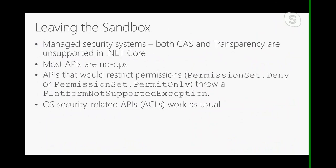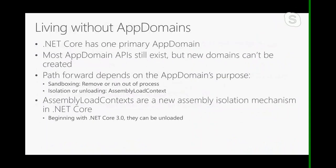In most cases this doesn't require any changes in your application — you just need to understand that these attributes and calls no longer have any effect. The one case where this will require a change is if you're using any APIs which restrict permissions. If you call PermissionSet.Deny or PermitOnly, these would have worked previously, but now in .NET Core they throw a PlatformNotSupportedException so that developers are really clear that they are not restricting permissions, because in .NET Core all code runs as fully trusted and security critical. APIs relating to ACLs still work as expected since that's OS-level access control, not managed security. But anything CAS-related, APTCA, transparency — that stuff no longer works in .NET Core.